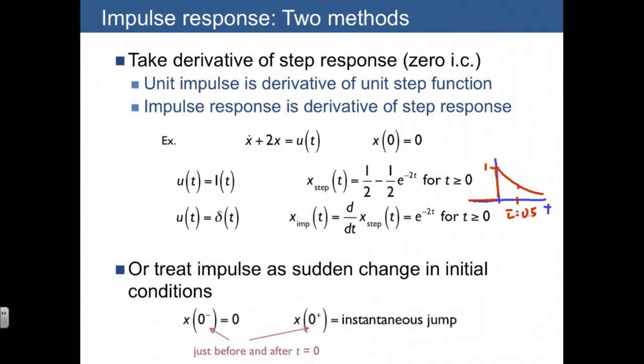It's equivalent to having x take on two different values just before and just after time equals 0, which we denote by 0 minus and 0 plus. The question is, what is the instantaneous jump that happens in the initial conditions?